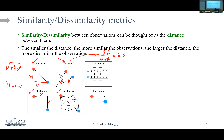We also have Minkowski distance — when p equals 1 that's Manhattan distance, and p equals 2 gives Euclidean distance; p can be other values like 3.5 or 0.3. Chebyshev distance looks at the horizontal and vertical distances and takes the maximum: it's the maximum of |y_i minus x_i| across all observations.